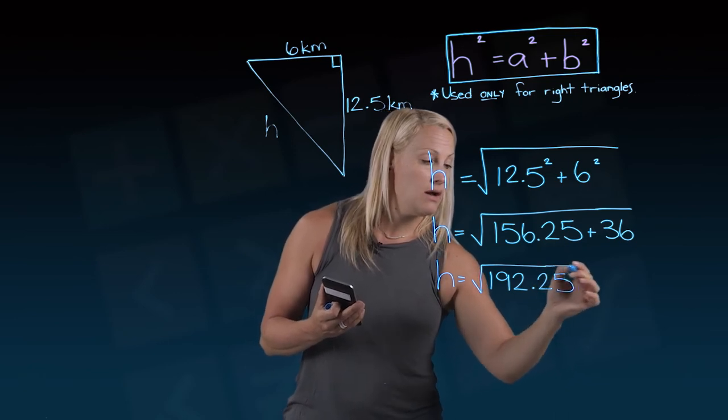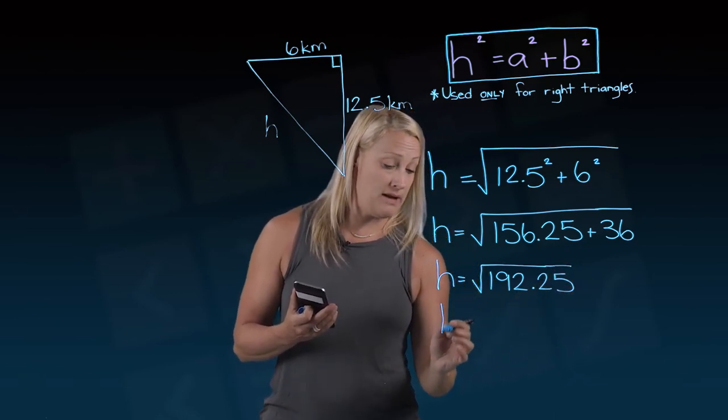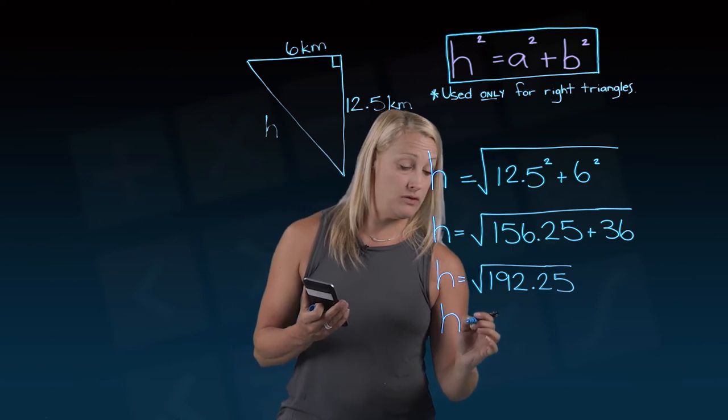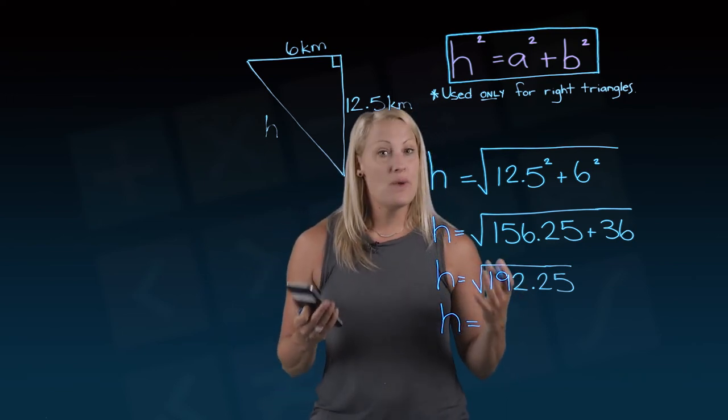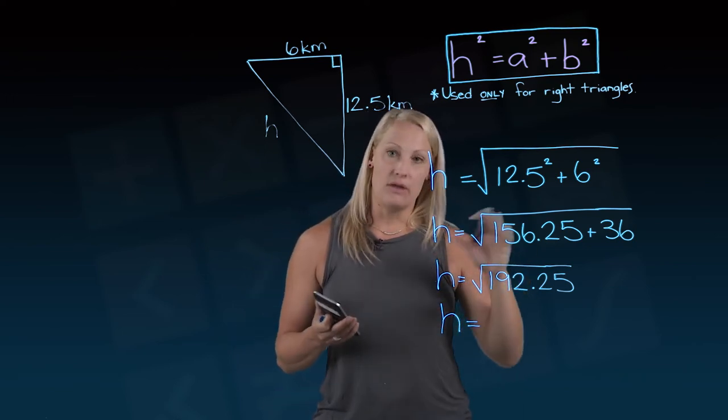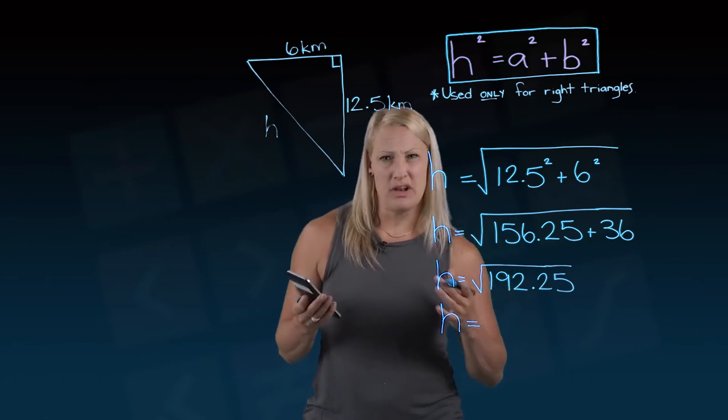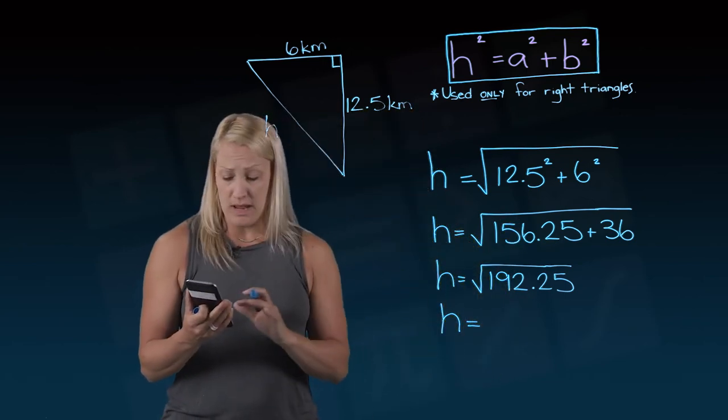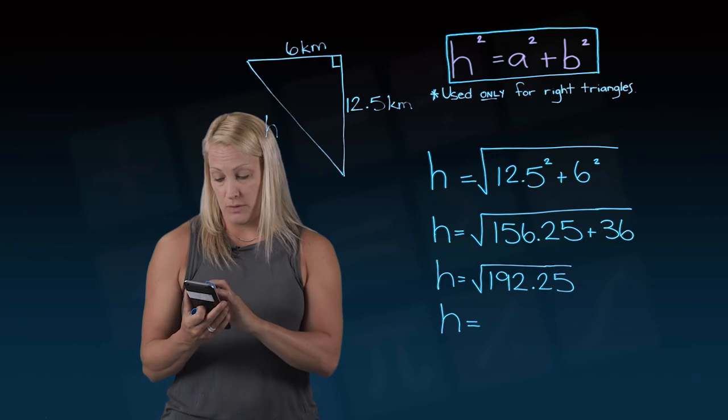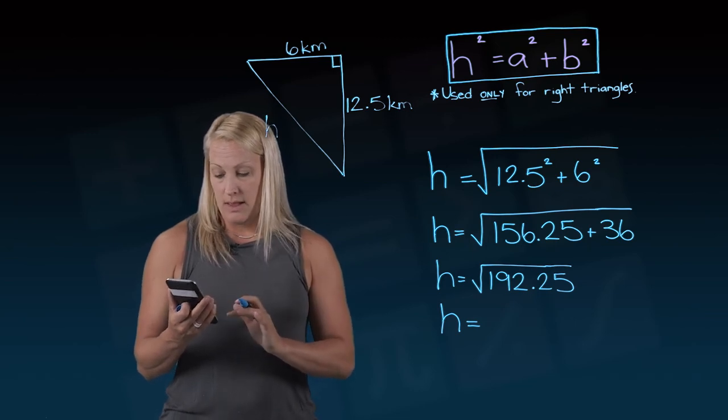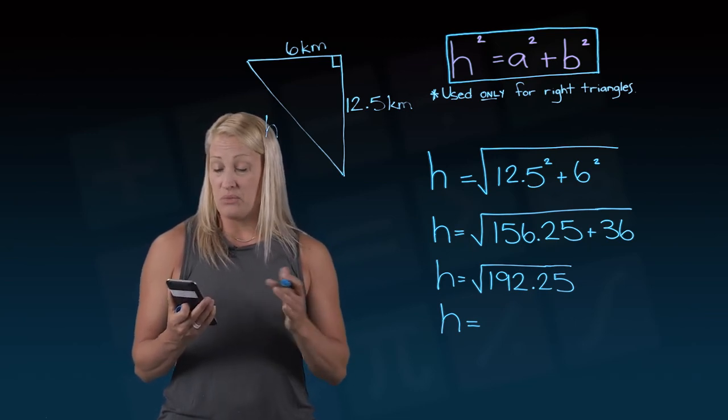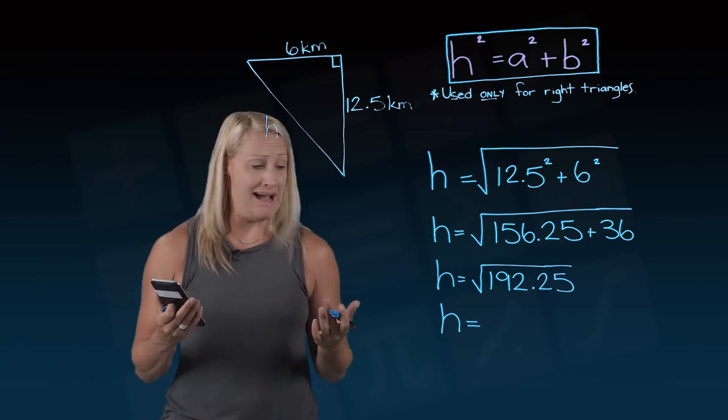So depending on your calculator, I can just hit the square root button now with 192.25 on my screen. You might have to clear it and type the square root button first depending on the calculator. But for me, I can just press that square root button. So I'm going to do that. And I get 13 point, from rounding to one decimal place, 13.9.